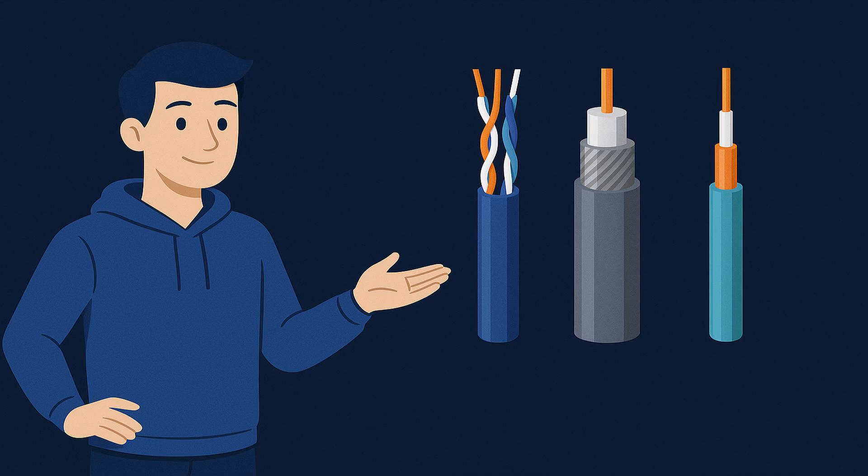Hey everyone! Welcome back to the place where we turn complex cybersecurity topics into simple, snackable knowledge. Today we're getting hands-on with the physical side of networks: network cabling. Let's talk about the three main types you'll encounter — twisted pair, coaxial, and fiber optics. Each one has its strengths, weaknesses, and best use cases, so let's unravel them.